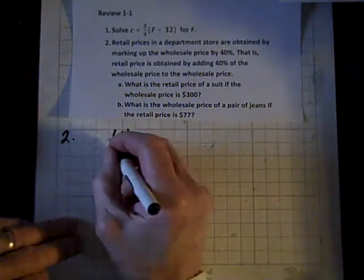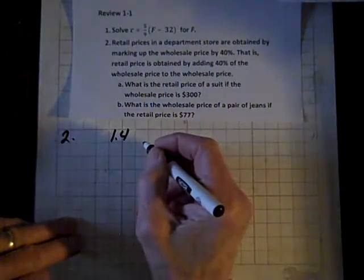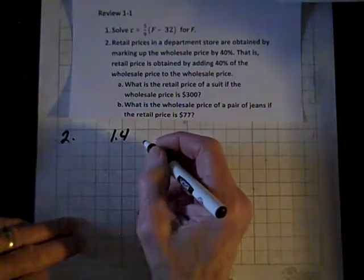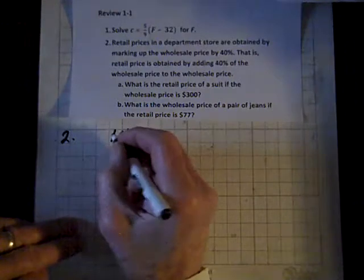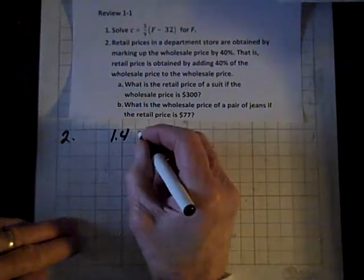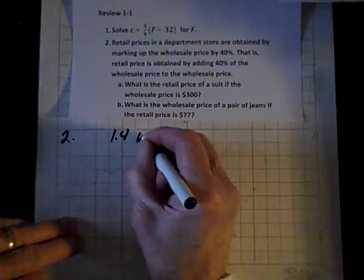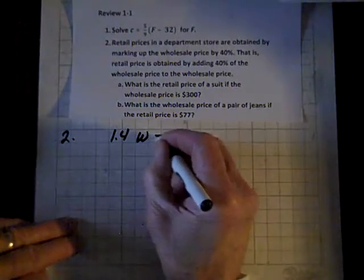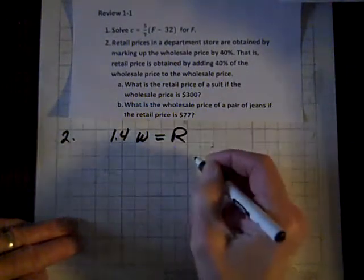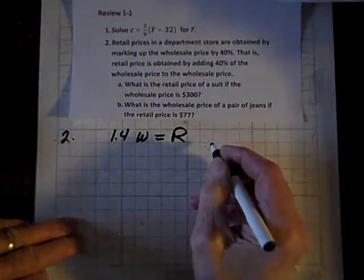1.4, 100 percent plus 40 percent is 140 percent, or 1.4 in decimal form. So 1.4 times the wholesale price W equals the retail price R. So there's our equation,